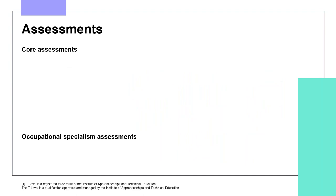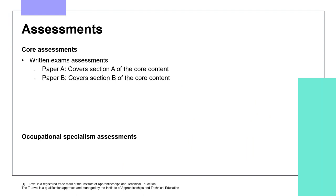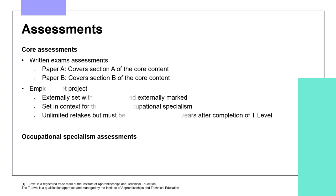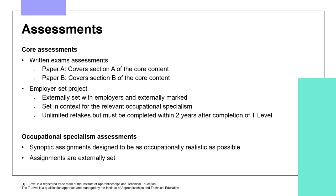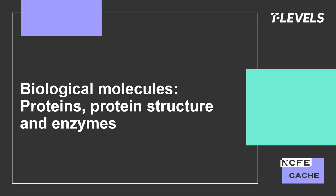The T Level Assessments break down into Core Assessments and Occupational Specialism Assessments. The Core Assessments consist of two written exam papers covering the core content in Section A and Section B, and an externally set skills assessment called an Employer Set Project, designed with employer input to be as realistic as possible. The Occupational Specialism is assessed in Year 2 via externally set Synoptic Assignments, also designed to be as occupationally realistic as possible.